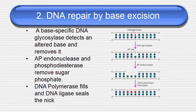Coming to DNA repair by base excision: a base-specific DNA glycosylase detects an altered base and removes it. Then DNA polymerase fills the gap and DNA ligase seals it. In the figure, the damaged base is acted on by DNA glycosylase at the AP site; AP endonuclease works and the entire damaged portion is removed. The gap is filled by DNA polymerase I and the bases are sealed by DNA ligase — that is DNA repair by base excision.